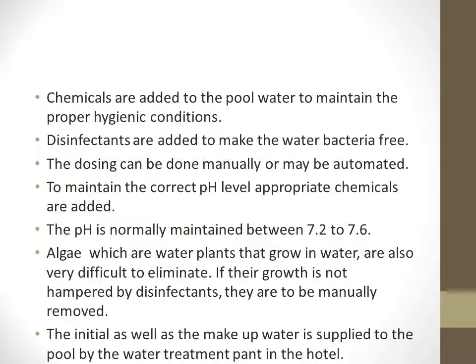To maintain proper hygienic conditions, we use chemicals such as chlorine. We also add disinfectants and other factors so that the water will be bacteria-free. Disinfectants can be added automatically or manually. We also need to maintain and take care of the pH value — the standard range is 7.2 to 7.6.